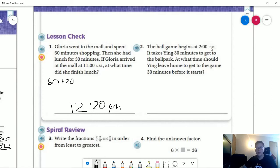And number two, the game begins at 2 p.m., spends 30 minutes to get to the park. At what time should Ying leave home to get to the game 30 minutes before it starts? That means we are going to have to add both of these times because we don't want to get here at 2. We want to get here at 1:30. So, that would be this half hour. We count backward another 30 minutes for the time that it would take to get there. So, if he wants to get there 30 minutes before the game starts, he would have to leave an hour before the game starts, and that would be 1 p.m.